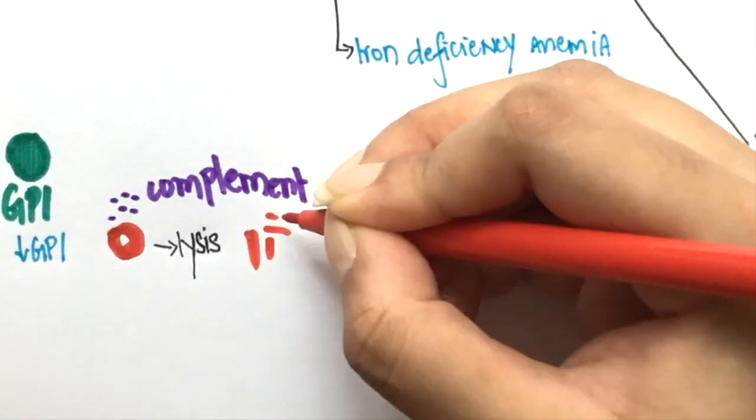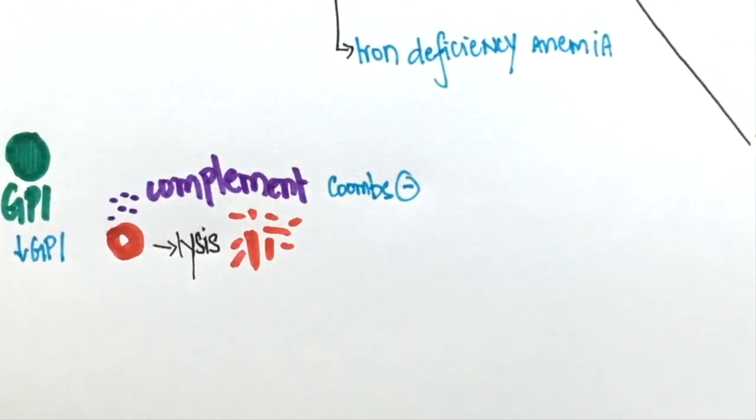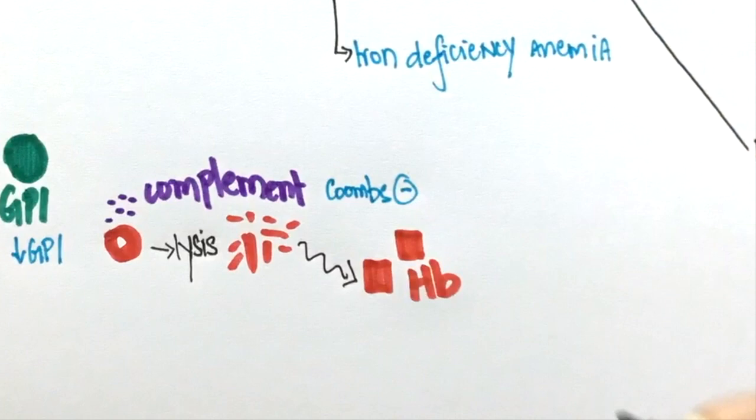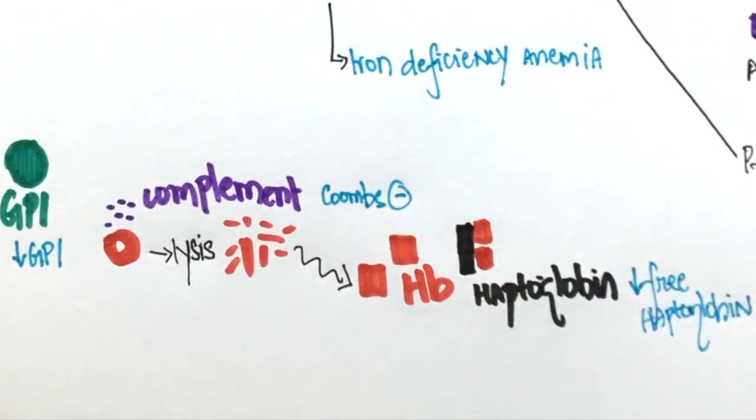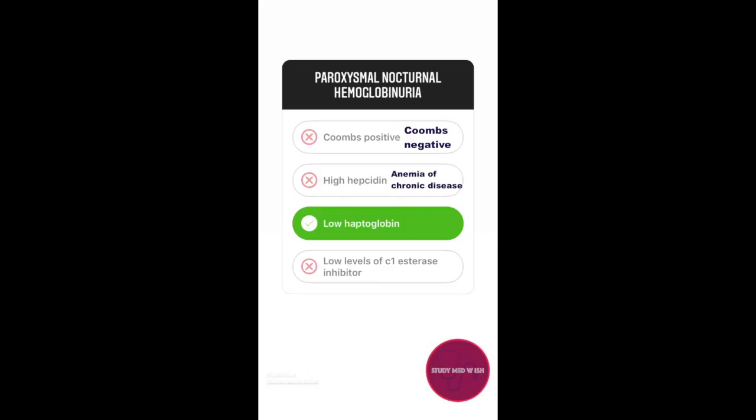When cells undergo hemolysis, they release hemoglobin. Hemoglobin is taken up by haptoglobin. So the free haptoglobin levels will be low. Hepcidin is high in anemia of chronic disease. C1 esterase inhibitor levels are low in hereditary angioedema.